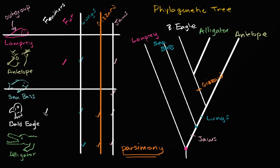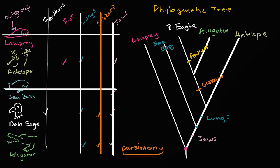Now let's account for the feathers. The bald eagle is the only one that has feathers, so at some point you have the common ancestor of the alligator and bald eagle, it branches off into multiple species, one of which gets feathers. That could have branched into many things, because we know the bald eagle isn't the only species with feathers. We've accounted for feathers. Now we just have to account for the fur of the antelope — someplace along this right branch, we could put the fur.